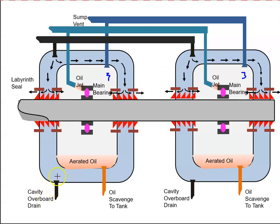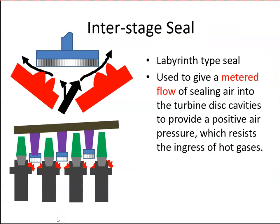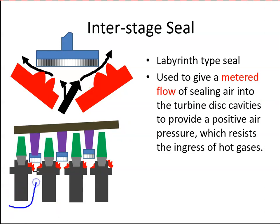That's the labyrinth seal as applied to a bearing compartment or bearing chamber — but it can also be used in other applications, such as the interstage seal. Here we have a turbine area with turbine blades, nozzle guide vanes, and interstage seals. Bleed air comes through and passes across the knife edges, creating a high pressure area on one side and a low pressure area just beyond.